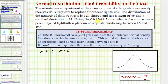We're asked to use the sixty-eight, ninety-five, ninety-nine point seven rule, or in this video we'll use the TI-84 to determine the approximate percentage of light bulb replacement requests numbering between sixteen and forty-nine. So if we let x be equal to the number of requests, we want to determine the probability that x is greater than sixteen and less than forty-nine.